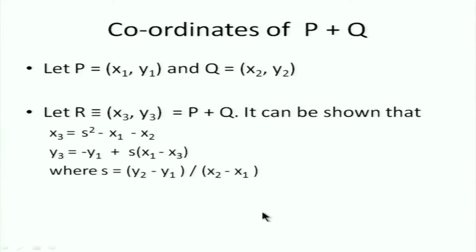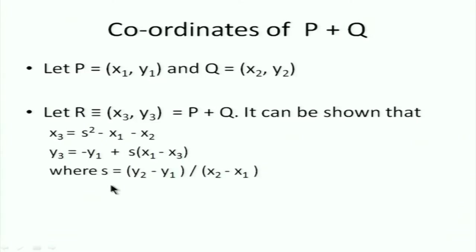Here are the formulas — we won't derive them here, they're derived in the book. If P = (x₁, y₁) and Q = (x₂, y₂), then their sum has coordinates x₃ = s² − x₁ − x₂ and y₃ = s(x₁ − x₃) − y₁, where s is the slope: s = (y₂ − y₁) / (x₂ − x₁). These expressions give us the result of adding two points.